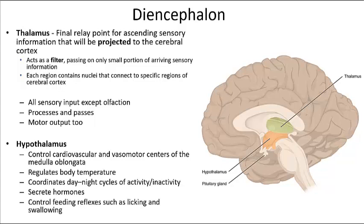The thalamus contains many nuclei, each projecting and receiving fibers from specific regions of the cortex, making it a critical relay center for sensory information. The hypothalamus forms the walls of the third ventricle, and these walls extend to form the infundibulum from which the pituitary gland is suspended. There are many important interactions between the hypothalamus and both the anterior and posterior pituitary, which we'll examine in the endocrine chapter.